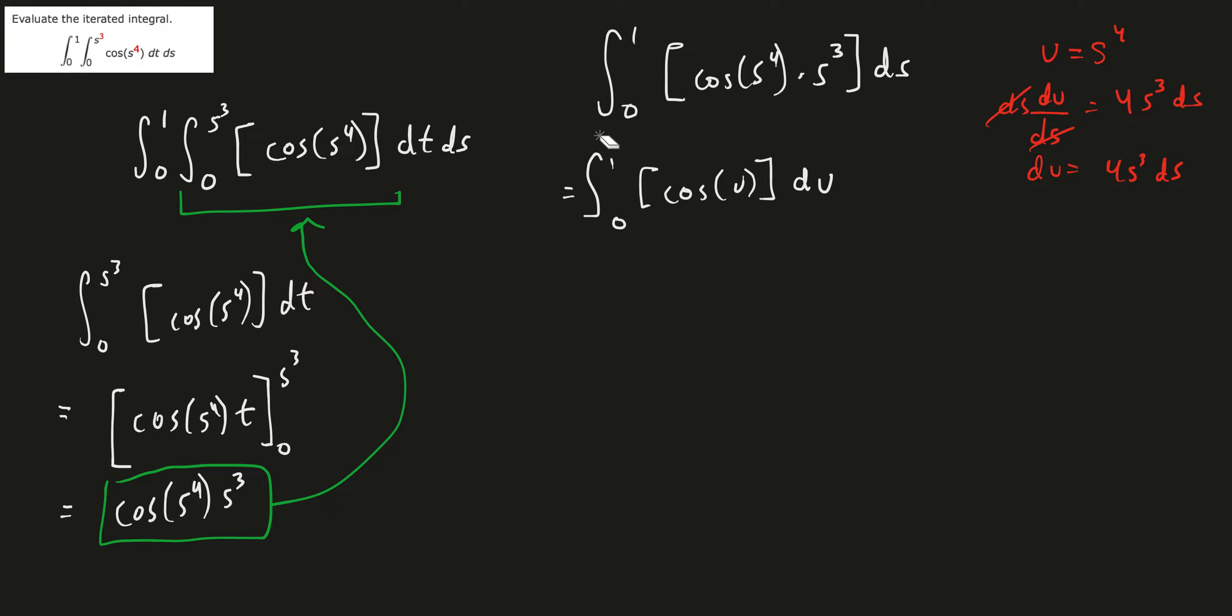But this is not complete because we have to insert a 1 fourth. Since we multiply by 4 to get this 4s cubed ds, we have to multiply by 1 fourth, which is what we're doing here. That's why. So it's 1 fourth.